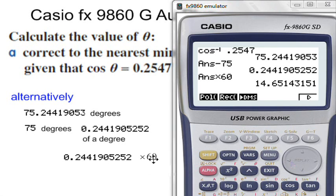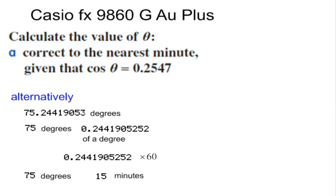So once again 0.244 of a degree which is 0.244 times by 60 minutes. Now the question did say to make it the nearest minute. So obviously 14.6 becomes 15.